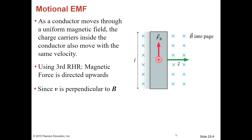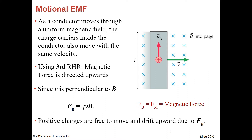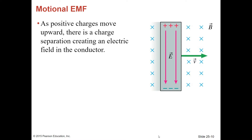Since the velocity vector is perpendicular to the magnetic field vector, we use the equation for magnetic force: F = QVB. Positive charges are free to move and drift upward due to that magnetic force, creating a collection of positive charges at the top and leaving the bottom negative. As positive charges move upward, there is a charge separation creating an electric field inside the conductor. With that electric field, you're going to have a potential difference. The electric field lines are directed downward because they always point in the direction a positive charge would move.